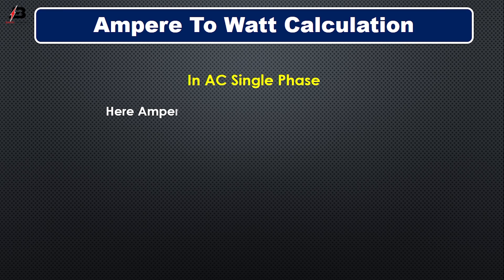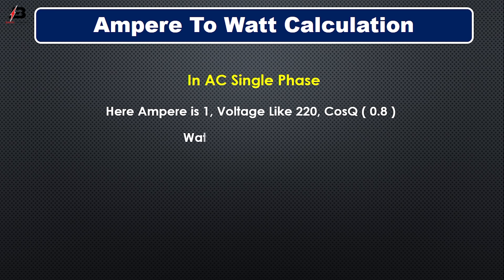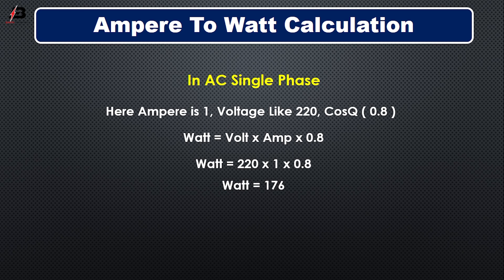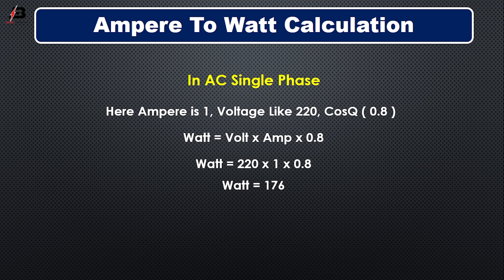In AC single phase, here ampere is 1, voltage is 220 volts, and the power factor is 0.8. If we calculate using the formula voltage multiplied by ampere multiplied by power factor, our watt will be 176 watts.